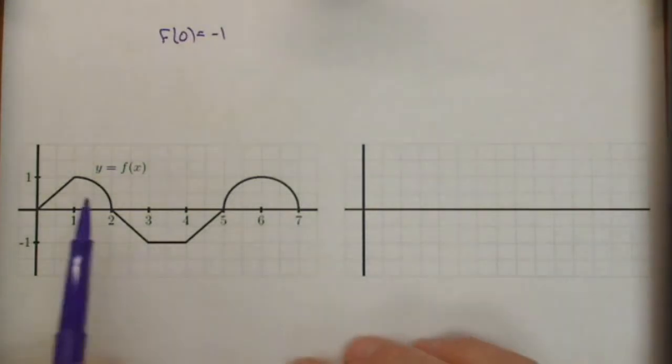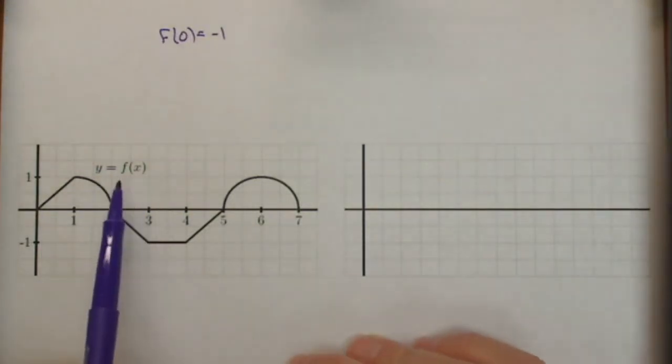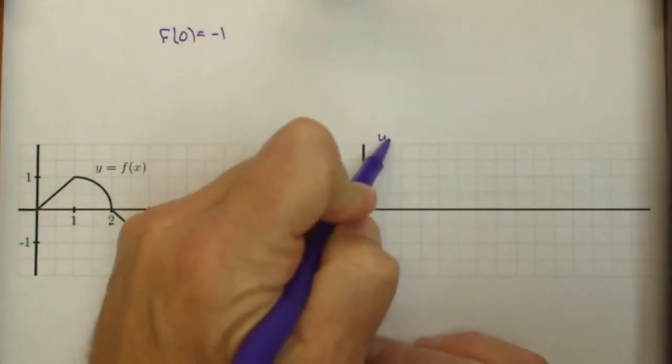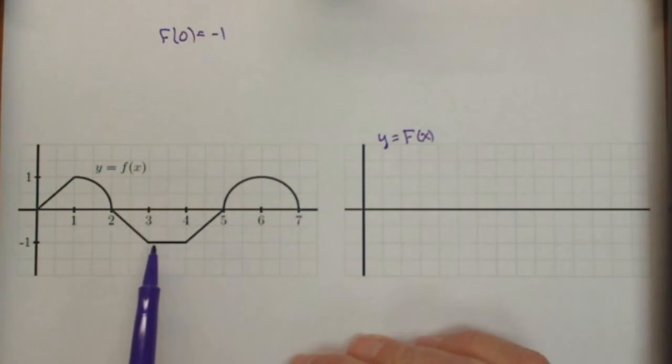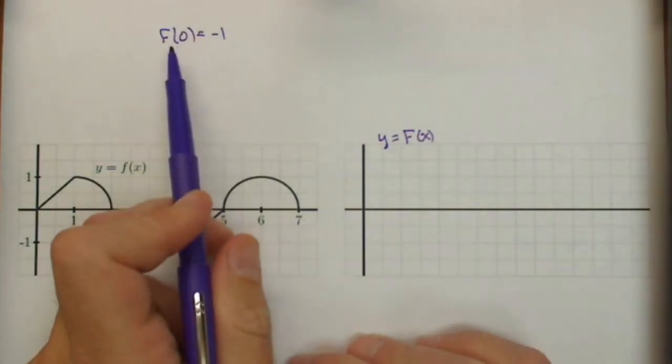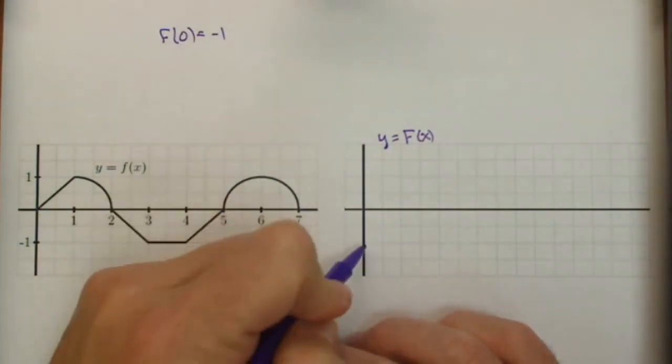In activity 5.1, we're given the graph of f of x, lowercase f of x, and we're going to draw the graph of capital F of x, the antiderivative, based on this and an initial condition that capital F of 0 equals negative 1.